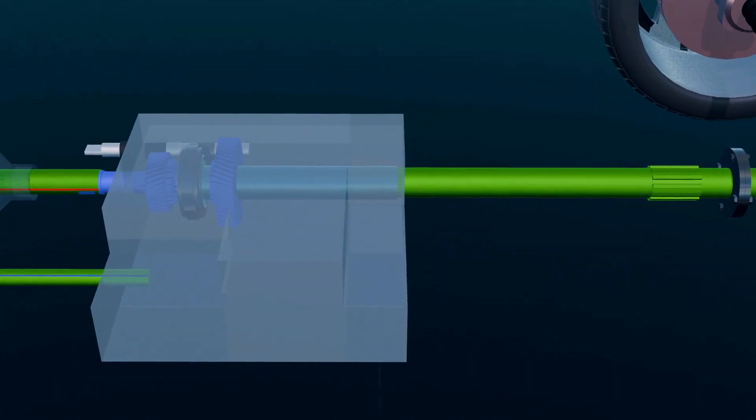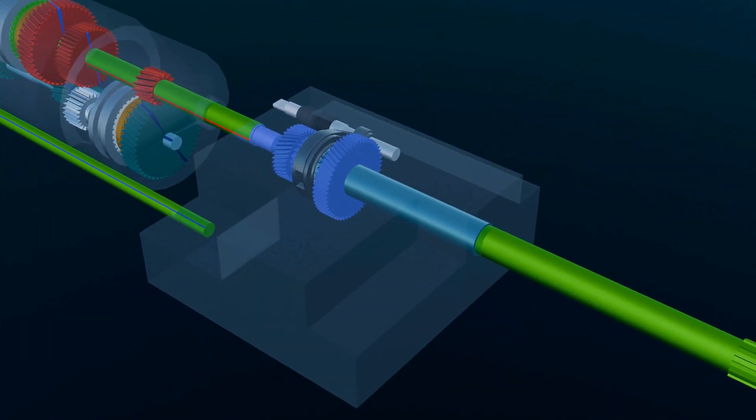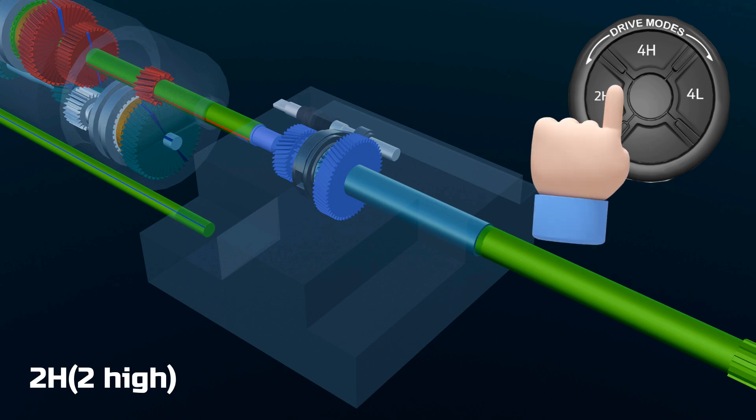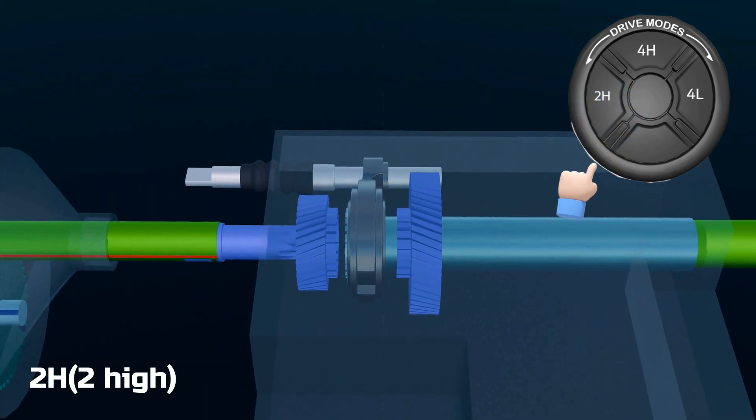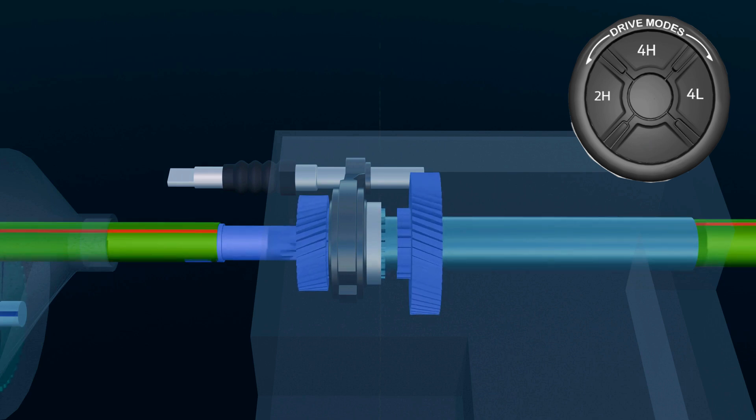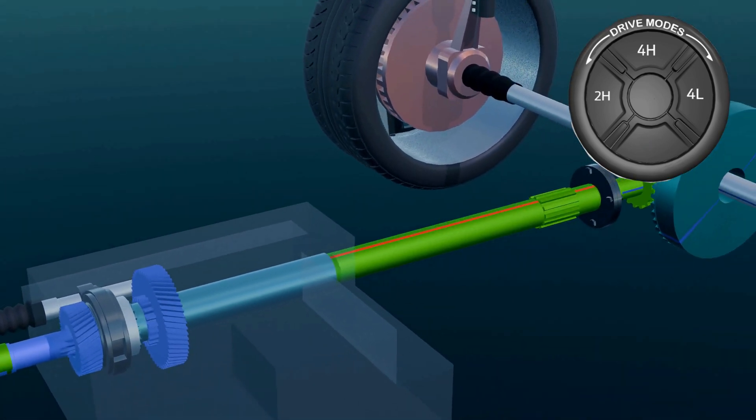Now let's understand the transfer case a bit deeper. A 4x4 system typically includes three drive modes: 2H, 4H, and 4L, and all of them are controlled via the transfer case. Let's begin with the 2H or the two-wheel high mode. Most 4x4 vehicles have an additional gear lever or switch to activate these modes. In two-wheel high, engine power is sent only to the rear wheels, allowing high-speed driving on normal roads like a regular rear-wheel drive car.